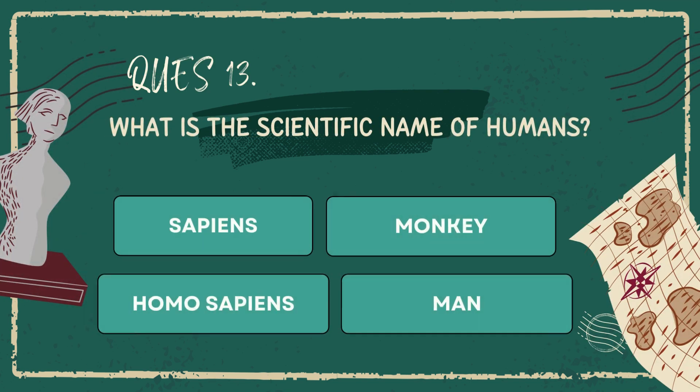What is the scientific name of humans? Sapiens, monkey, homo sapiens, man.